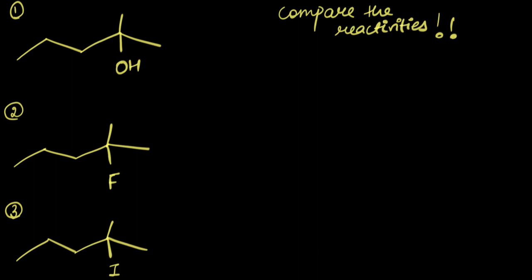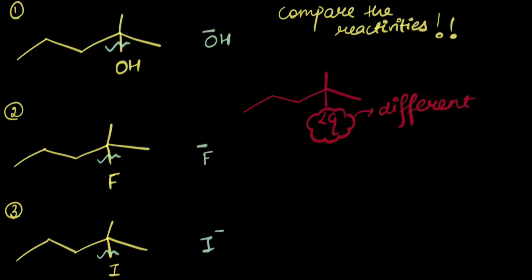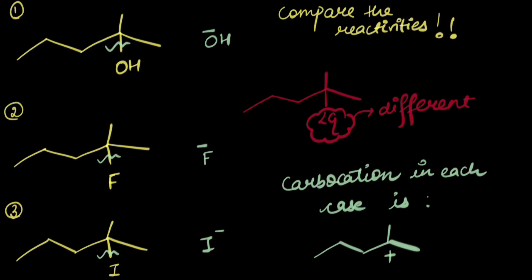If we look carefully, in each case, the substrate has only one thing different, which is the leaving group. The rest of the structure is same in each case. So if I try and break these bonds, I'll get OH-, F-, and I- respectively as the leaving groups, while the carbocation formed is the same in each case. Here, I- has the largest size. The charge spreads out well in this case. The charge per unit area is less and it is the most stable out of all.